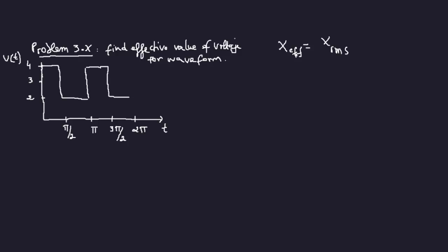Okay, so continuing with the problem that I started in the last video, AC circuit one. The problem here says find effective value of voltage for waveform.